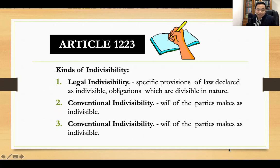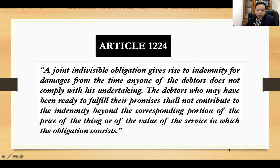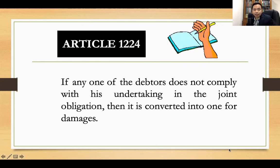And then you have conventional indivisibility, which means that the performance is impartial or the performance by the parties has been agreed upon by the parties, which makes it indivisible. Now we go to Article 1224: a joint indivisible obligation gives rise to indemnity for damages from the time anyone of the debtors does not comply with his undertaking.